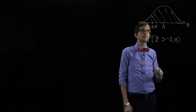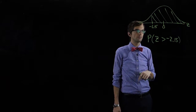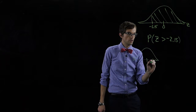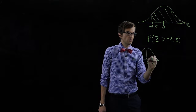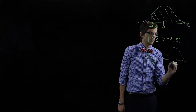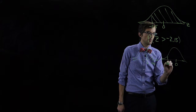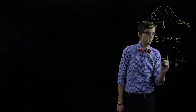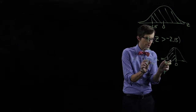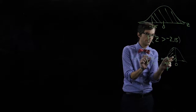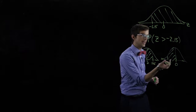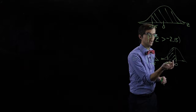So how are we going to find this area? Well, we know that this is a symmetric distribution, and we know that the area between zero and two point one five is equal to the area between zero and negative two point one five. Those two areas are equivalent to each other. So if we find the area between zero and two point one five, that's the same as the area between zero and negative two point one five.